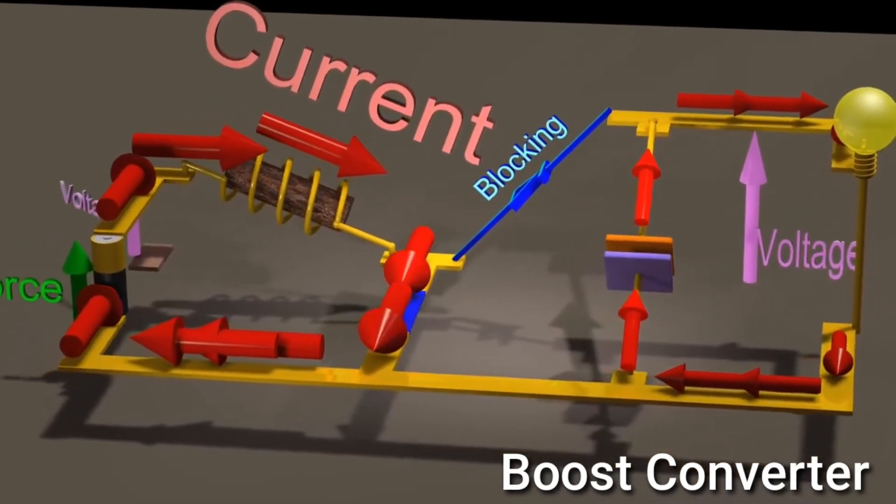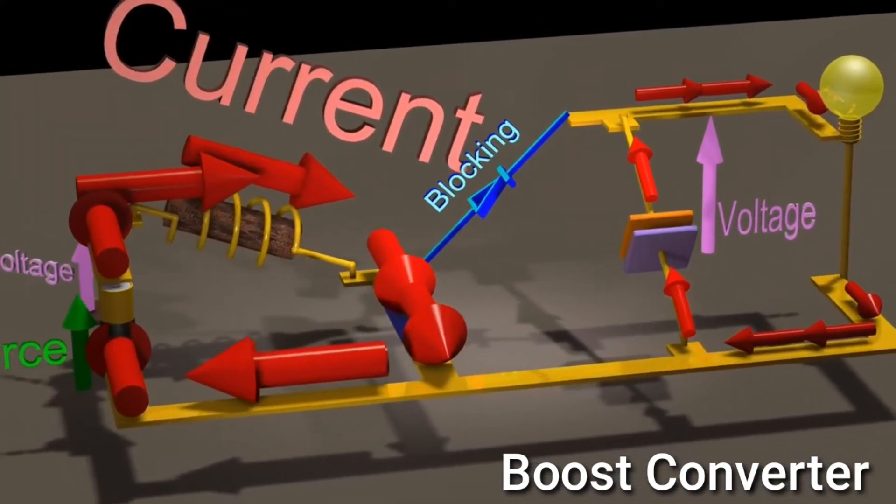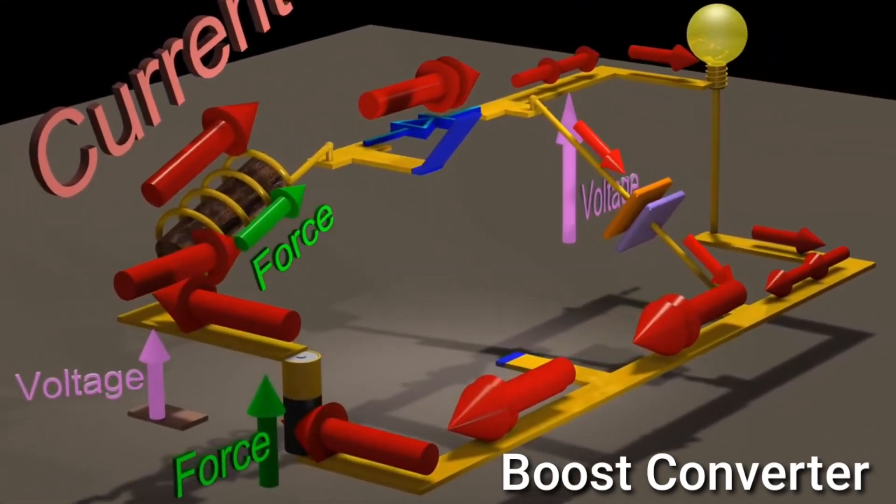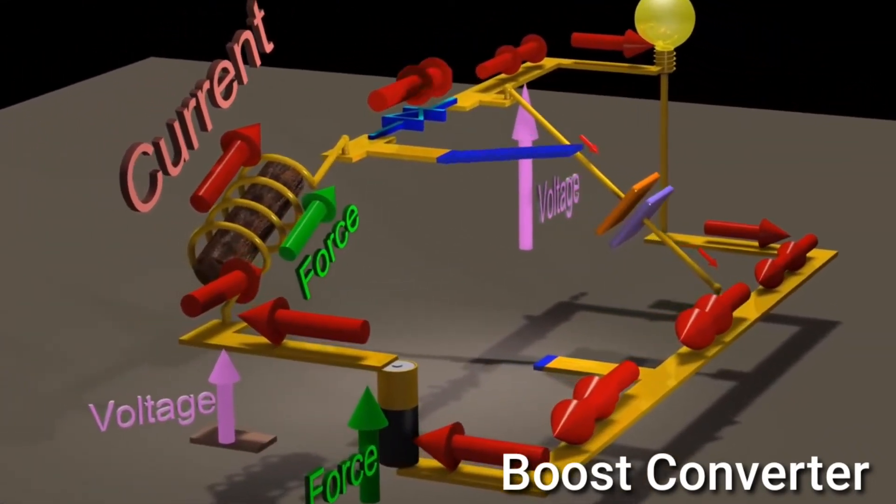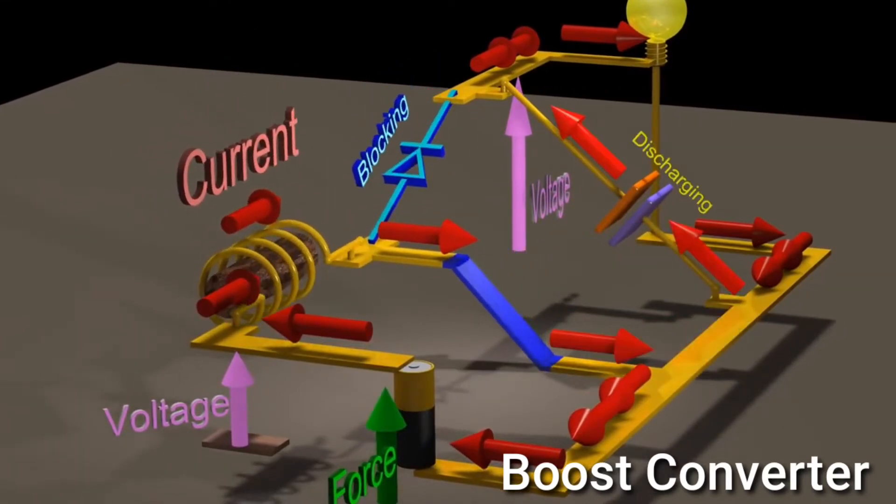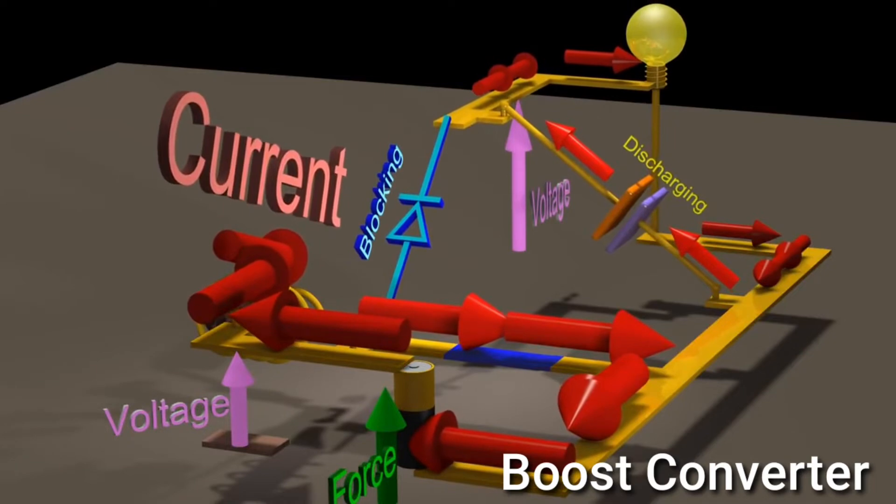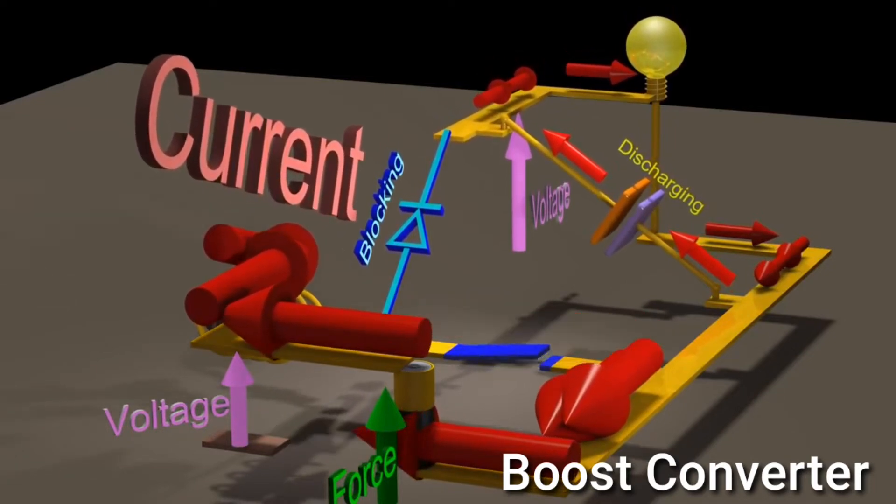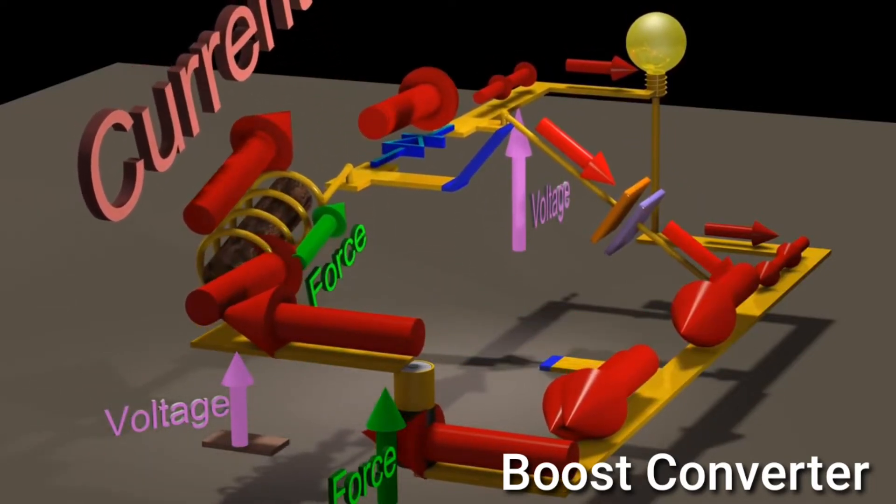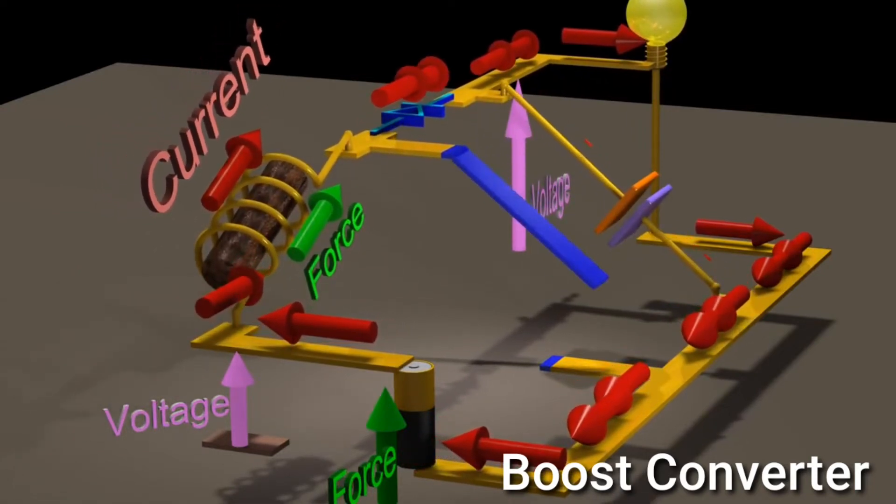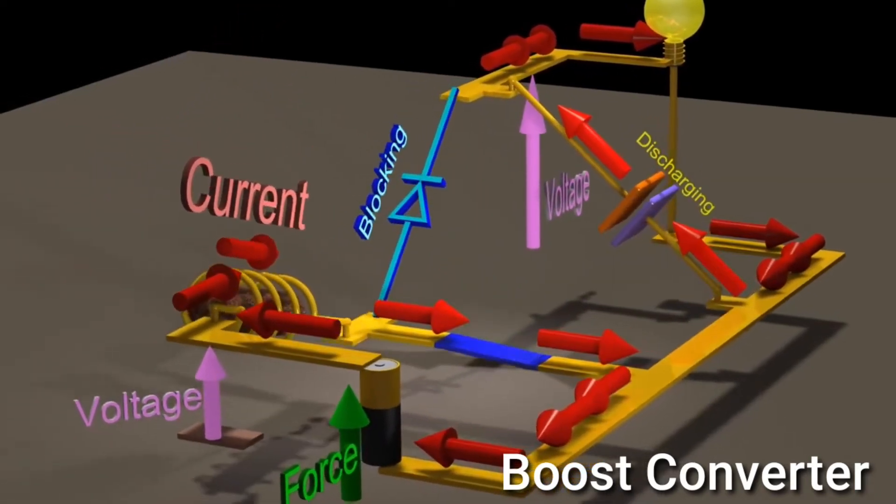Suppose we keep turning the switch on and off. By continuously turning the switch on and off, we have created a DC output voltage at the light bulb that is higher than the voltage of the battery. We call this a boost converter.